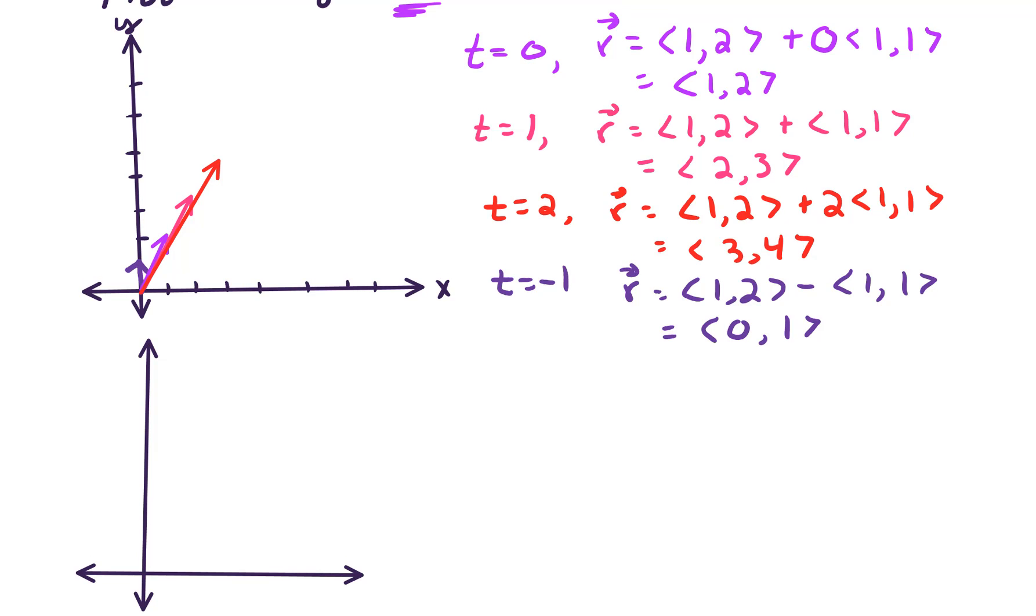So if I were to plot the endpoints of all these vectors, when T equals 0, I'm over 1 up 2. When T equals 1, I'm over 2 up 3. When T equals 2, I'm over 3 up 4. And when T equals negative 1, I'm over 0 up 1.